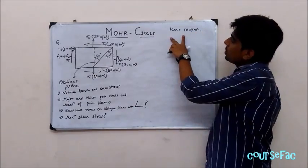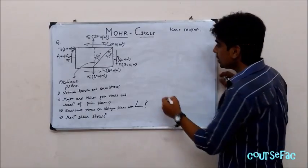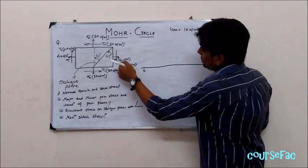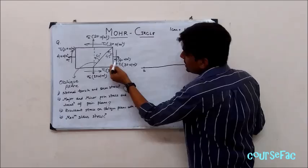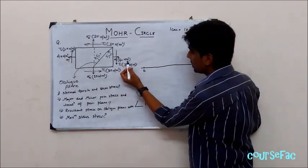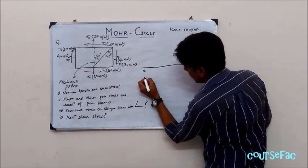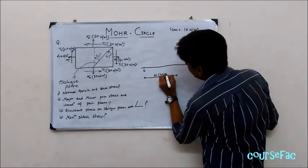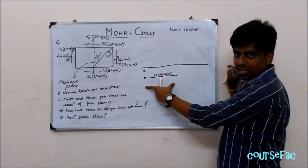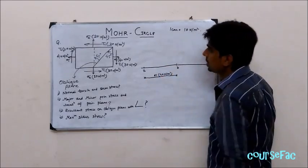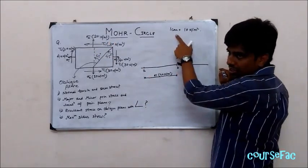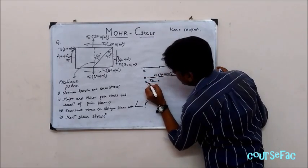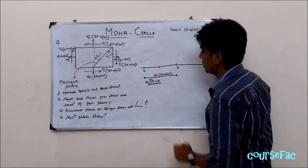Before drawing Mohr Circle, we need to define a suitable scale. We take one centimeter equal to 10 N/m² of stress. We draw a horizontal line and let the reference point be A. We sketch the direct stresses: sigma 1 is 40 N/m², which corresponds to 4 centimeters — let this be point B. Sigma 2 is 20 N/m², which corresponds to 2 centimeters — let this be point C.